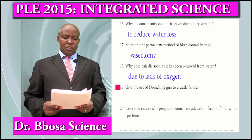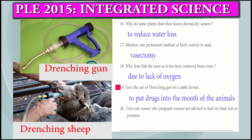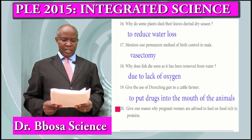Question 19: Give the use of a drenching gun to the cattle farmer. To put drugs into the mouth of animals.